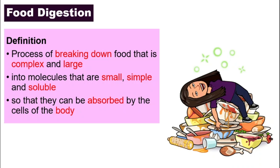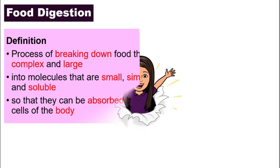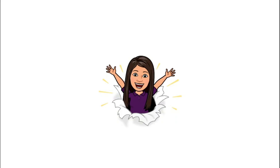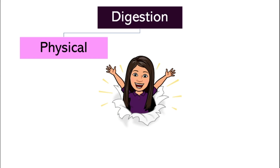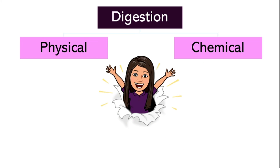So, three points to describe digestion: it's the process of breaking down food that is complex and large into molecules that are small, simple, and soluble, so that they can be absorbed by the body. Digestion can actually be divided into two different types: physical digestion and chemical digestion.